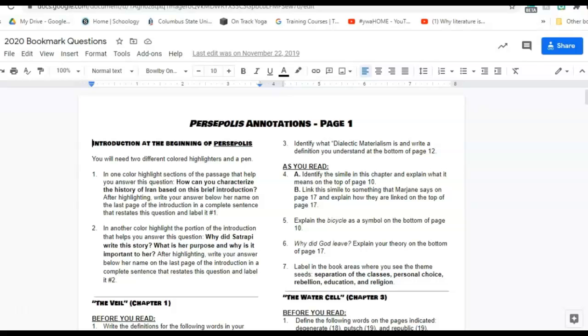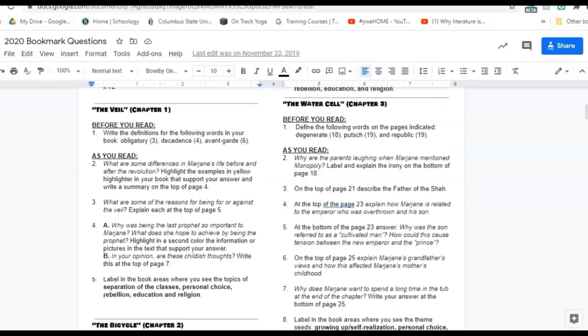As you continue to read, for example, the veil chapter one. For this chapter there are five questions. Question one is for before you read. Write the definitions for the following words in your book. So you'll look on page three where obligatory is. You'll find it, you'll highlight it, and then you'll write the definition beside the word obligatory. Same thing for decadence on page four and avant-garde on page six.